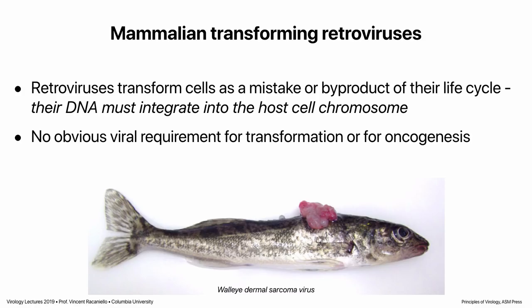Back to our exception: I said at the beginning no virus requires transformation or tumor formation for reproduction. But someone emailed me about a fish retrovirus called walleye dermal sarcoma virus — it causes tumors in walleye fish every year. The fish is fine. The tumor is caused by virus replicating in the cells. In the fall, as the weather gets cold, the tumor falls off, spreading the virus in the water so it can infect new fish. Without the tumor, the virus can't find a new host. This is the only known example where transformation and tumor induction is actually required for virus replication.